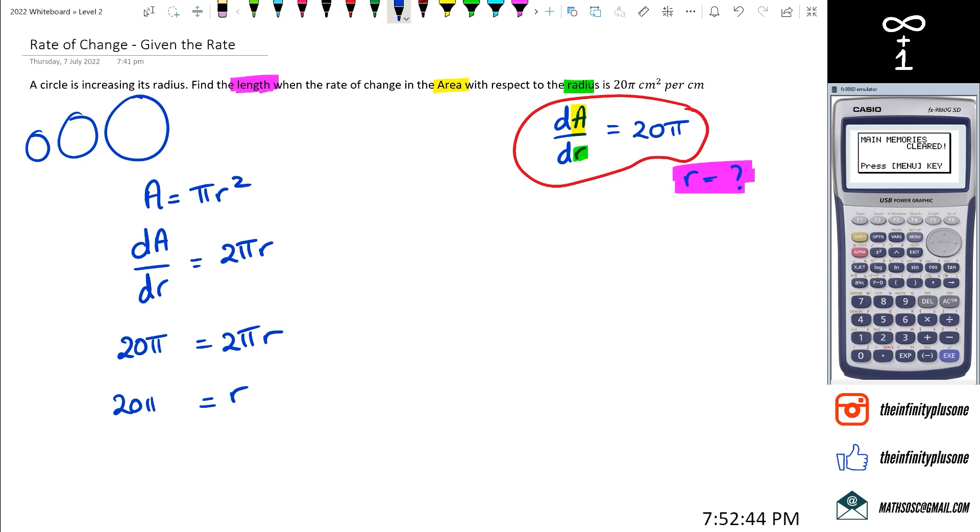So we can rewrite this as r is equal to 20 pi. And of course, the 2 pi, when you bring it across, it would be divided by. And we've got pi as a common factor. And then we've got 20 divided by 2, which equals to 10. So we can say that when the radius is equal to 10, that's when the rate of change of area with respect to radius is actually 20 pi centimeter squared per centimeter.